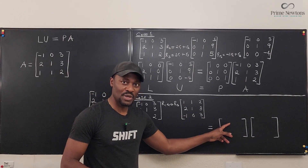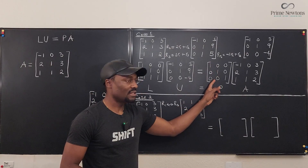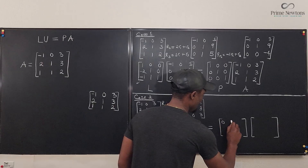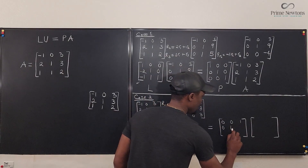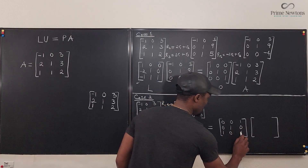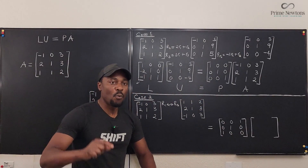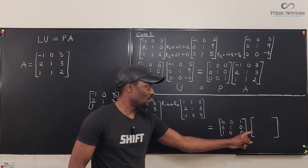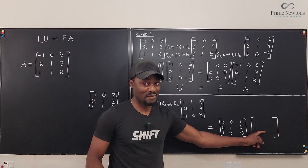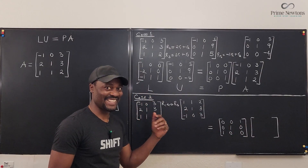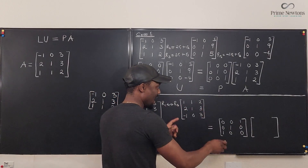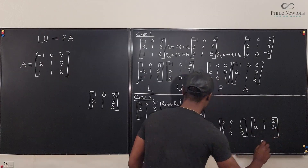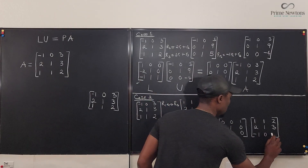Because I have done this row switch, I have to immediately go to P and switch its first and third rows. So P becomes: zero, zero, one (top row); zero, one, zero (middle stays the same); one, zero, zero (bottom row). This new matrix obtained after the row switch is what becomes your A in the equation — and you could use P to switch it back.